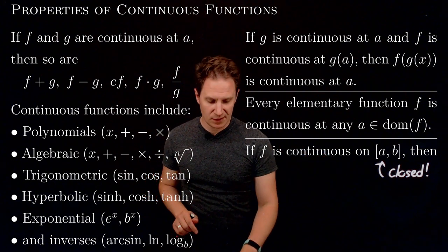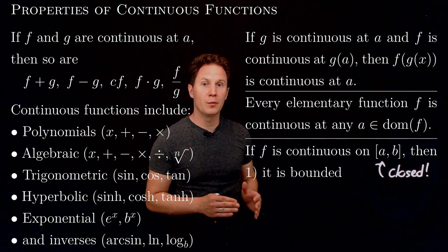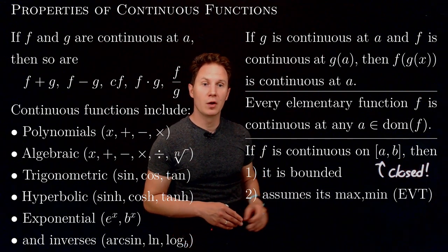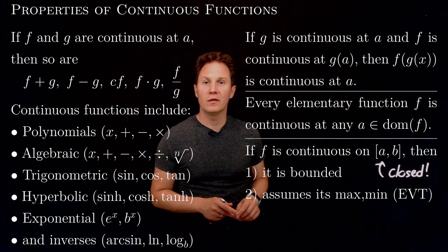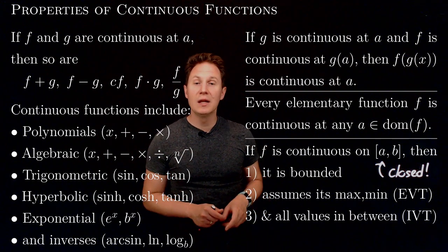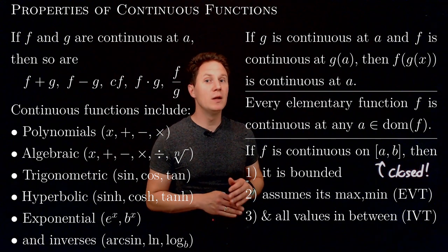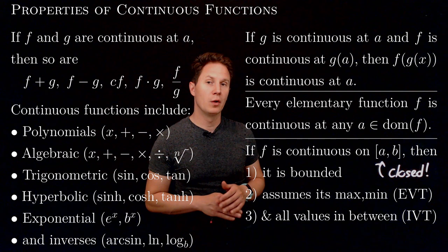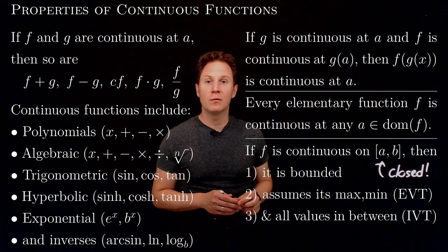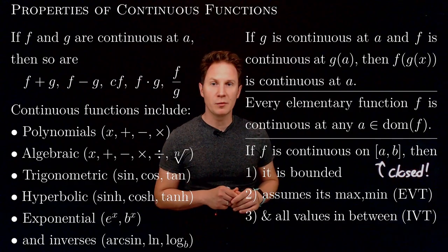First of all, it's bounded. It has some definite lower and upper bounds for its values. It assumes its minimum and maximum values, so this is a result known as the extreme value theorem. And not just the minimum and maximum values is being attained by this function, but every value in between the minimum and maximum value also is being taken, a result known as the intermediate value theorem. We will cover these in separate videos, but now it's time for some problem solving.